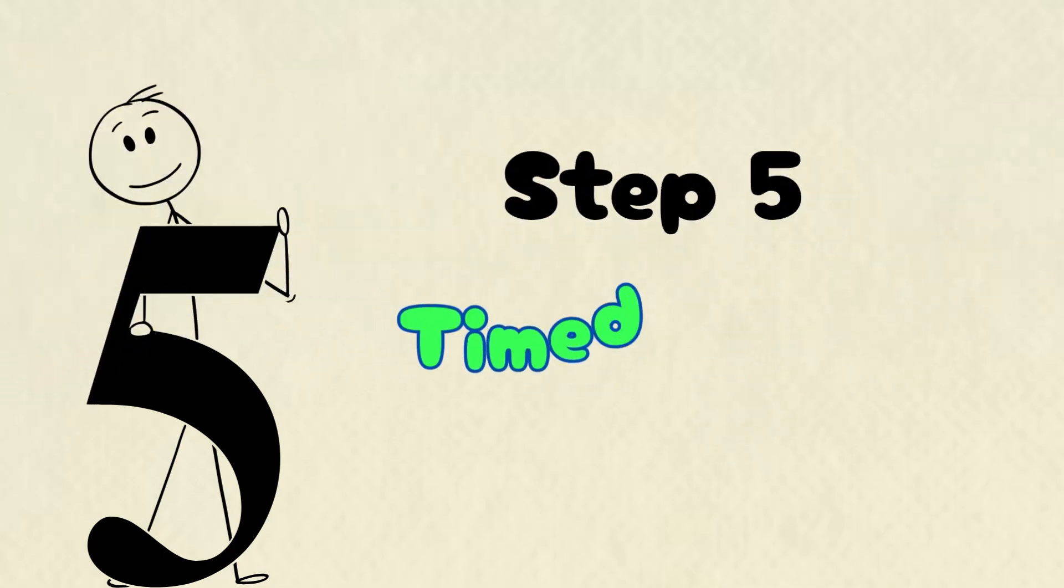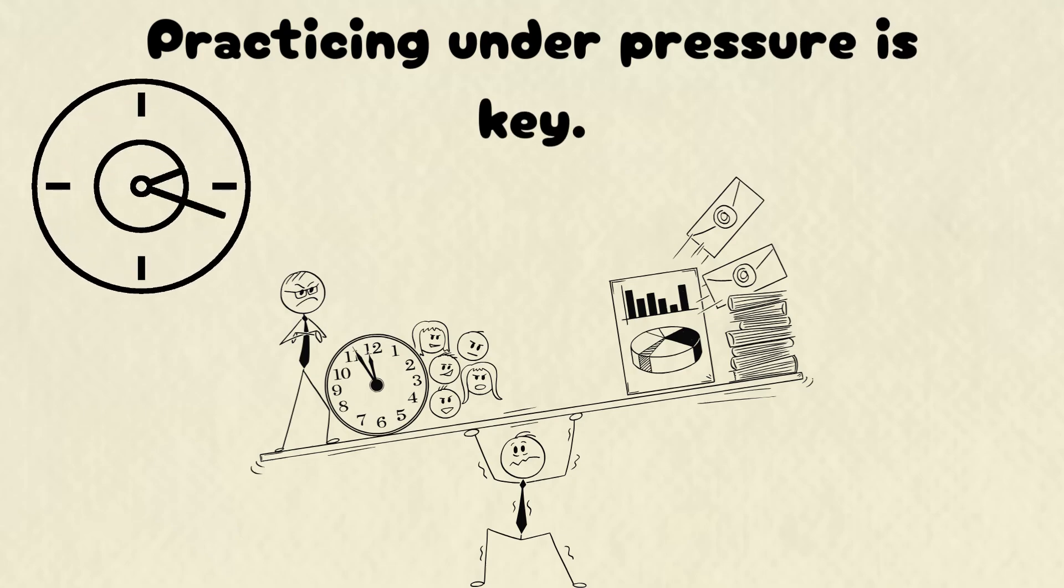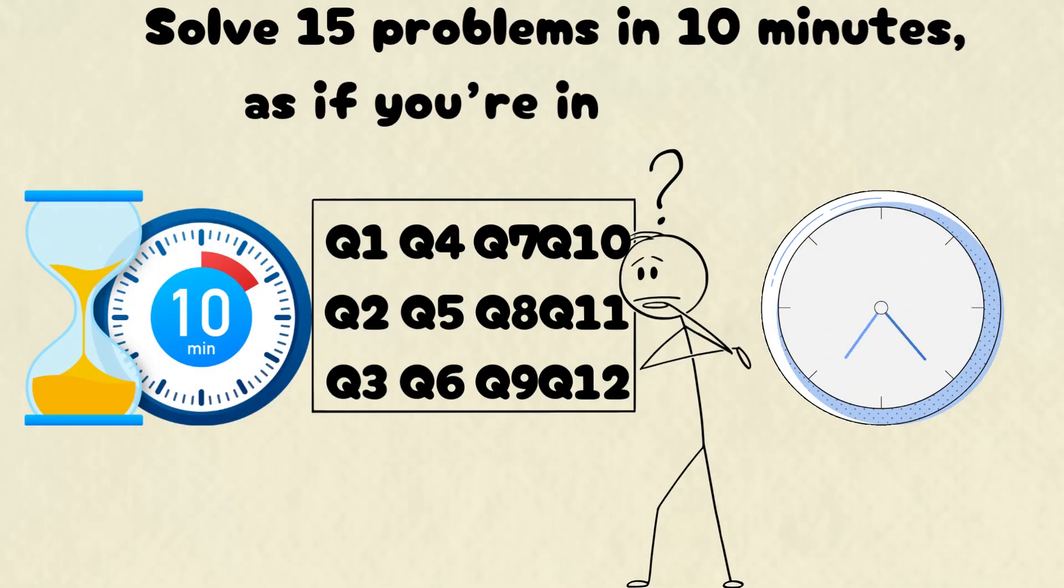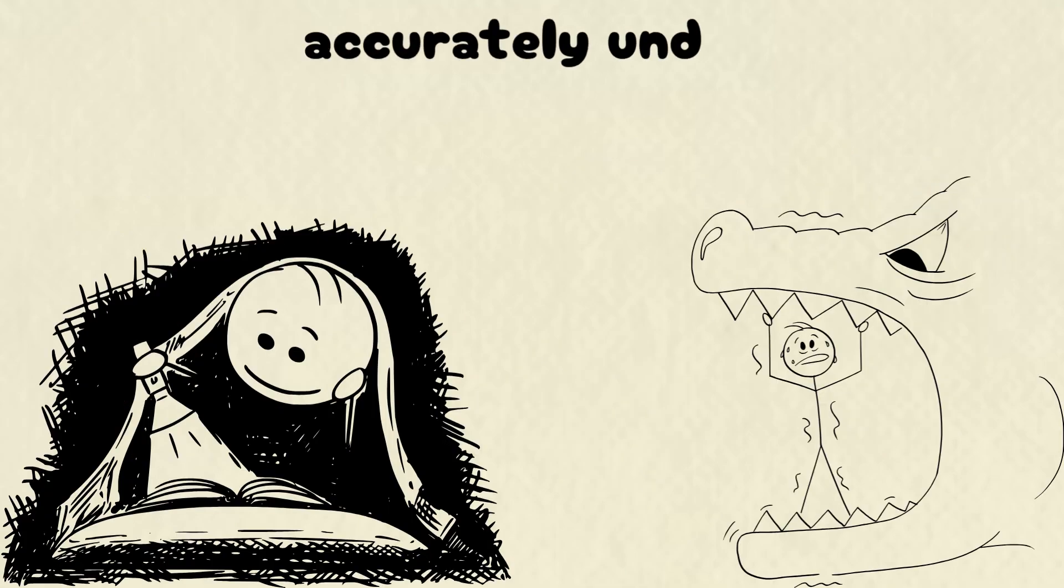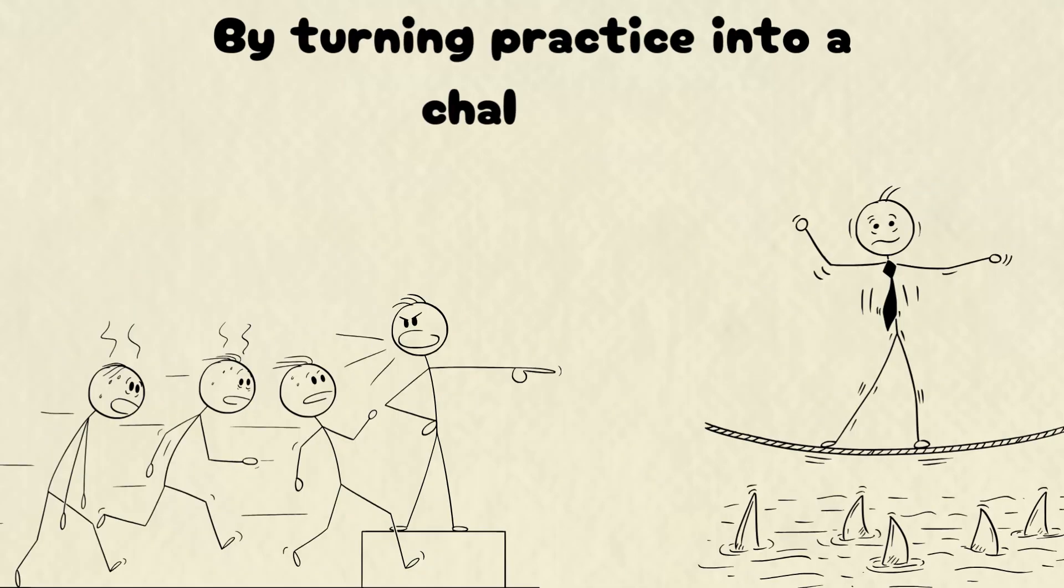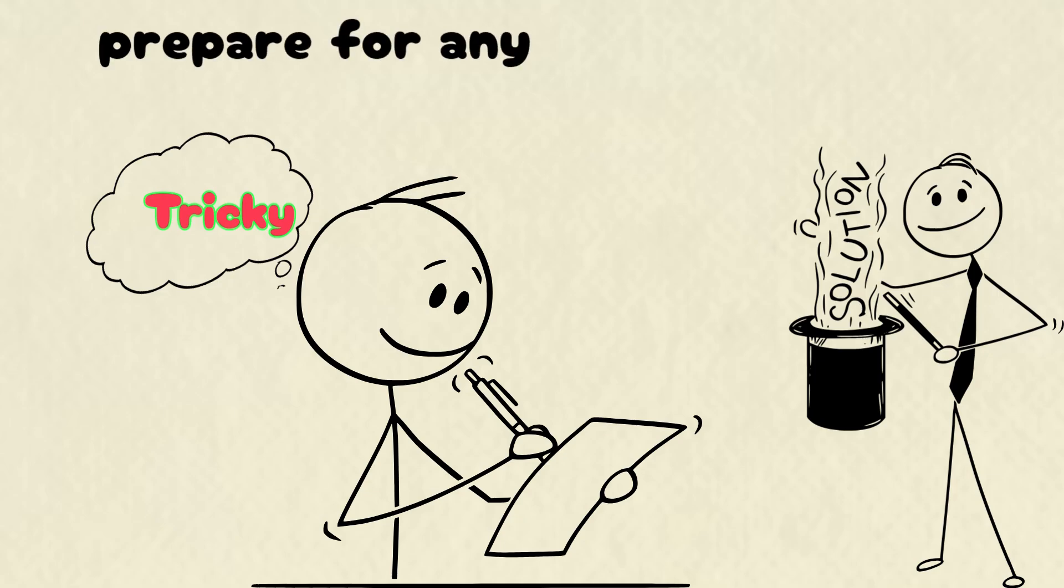Step five, timed practice. Speed meets accuracy. Practicing under pressure is key. Solve 15 problems in 10 minutes, as if you're in a real test. It trains your brain to think fast and accurately under stress. By turning practice into a challenge, you sharpen your reflexes, manage stress, and prepare for any tricky question the exam throws at you.